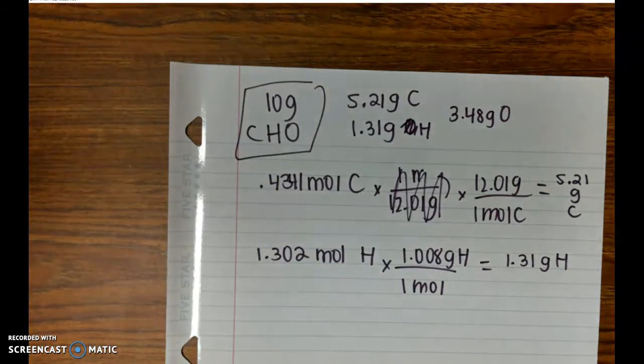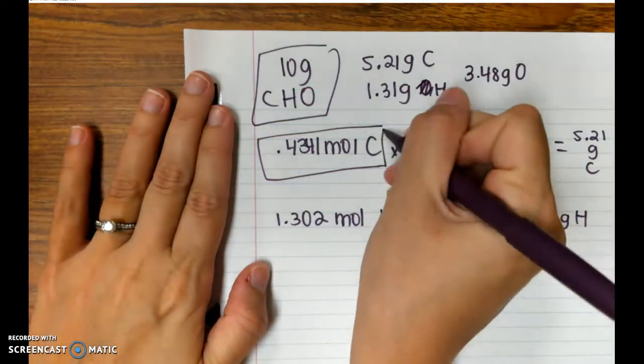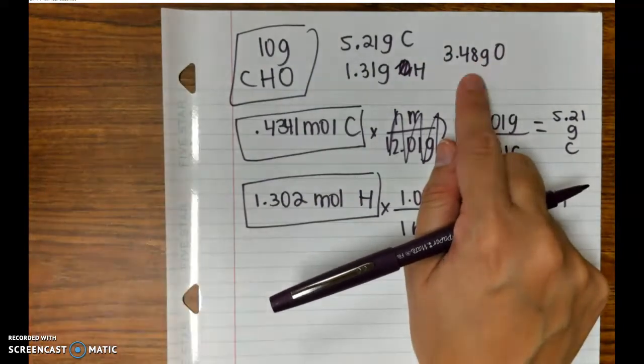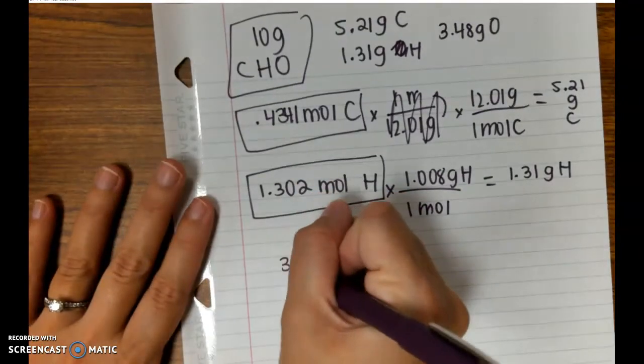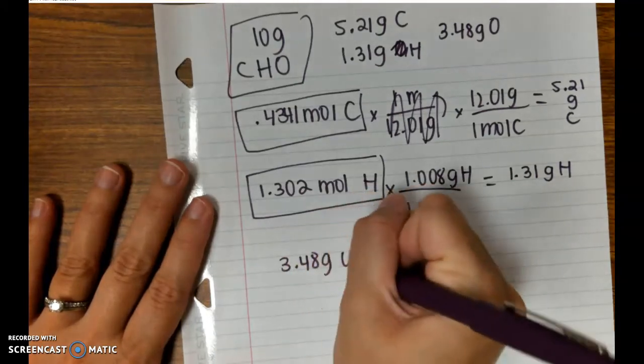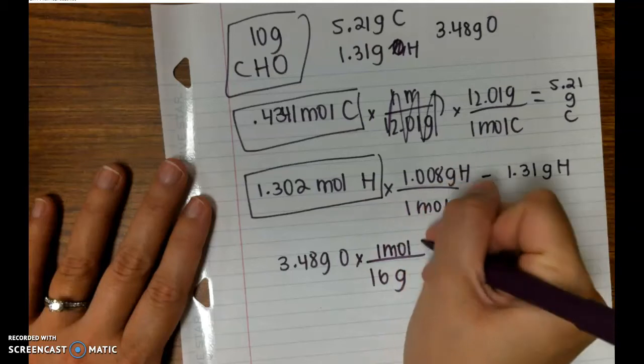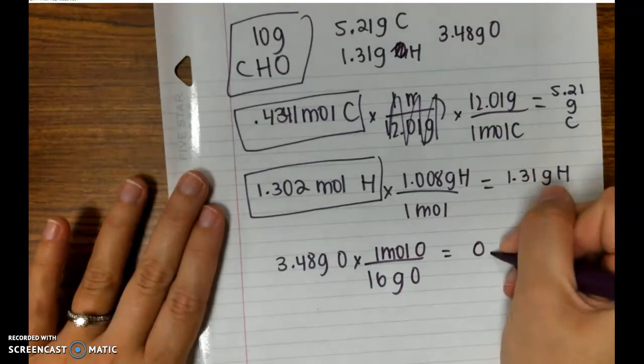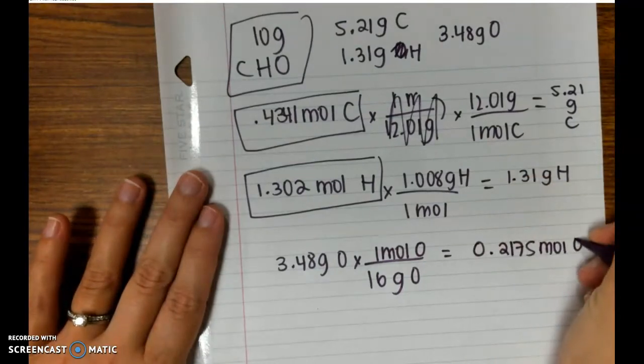We're trying to find the empirical formula. In empirical formula, you need to get moles of each element and divide by the smallest number of moles. So we need to go ahead and change that to moles. Divide it by 16, and we get that there were 0.2175 moles of O.